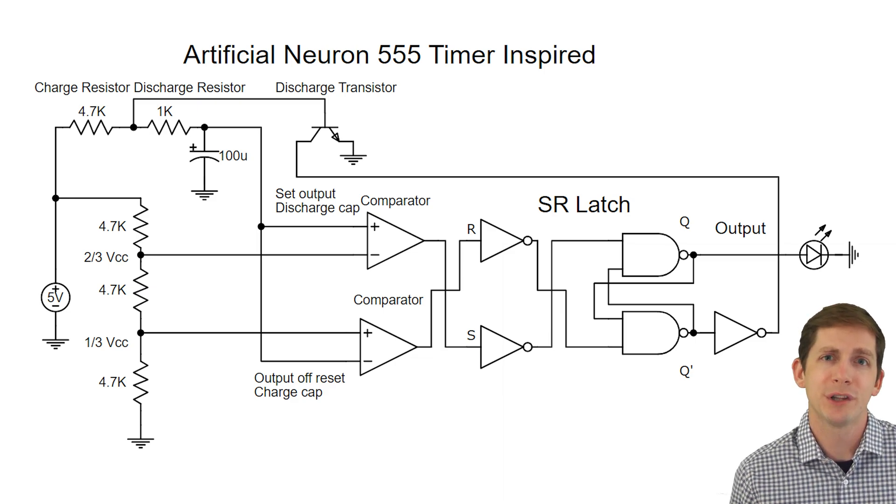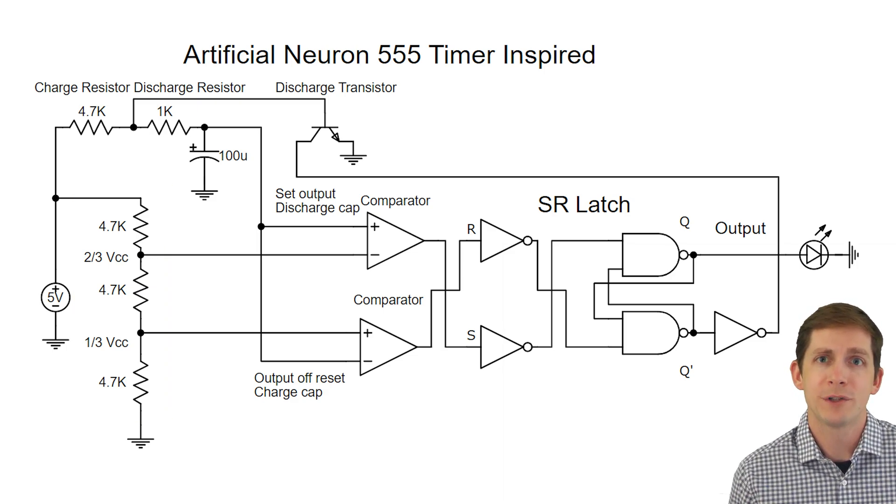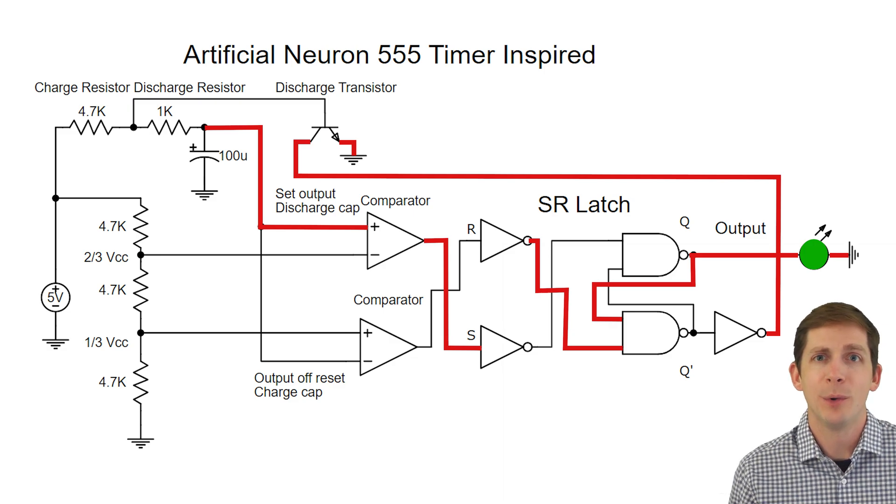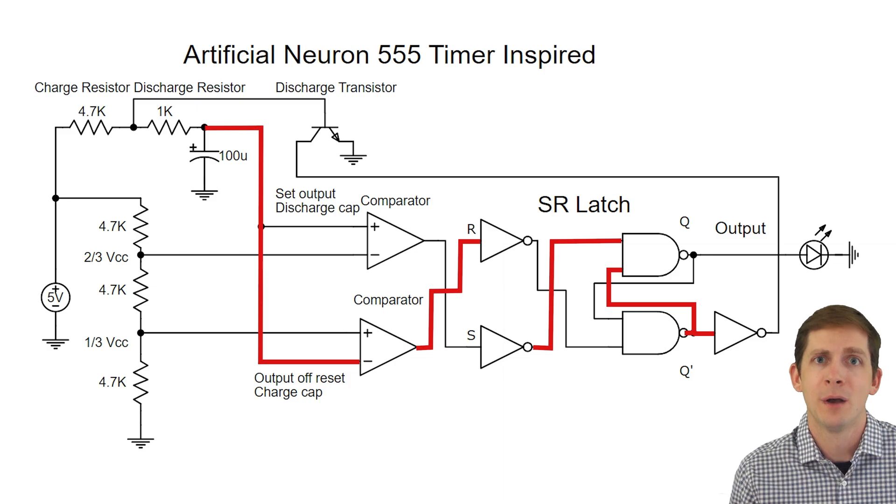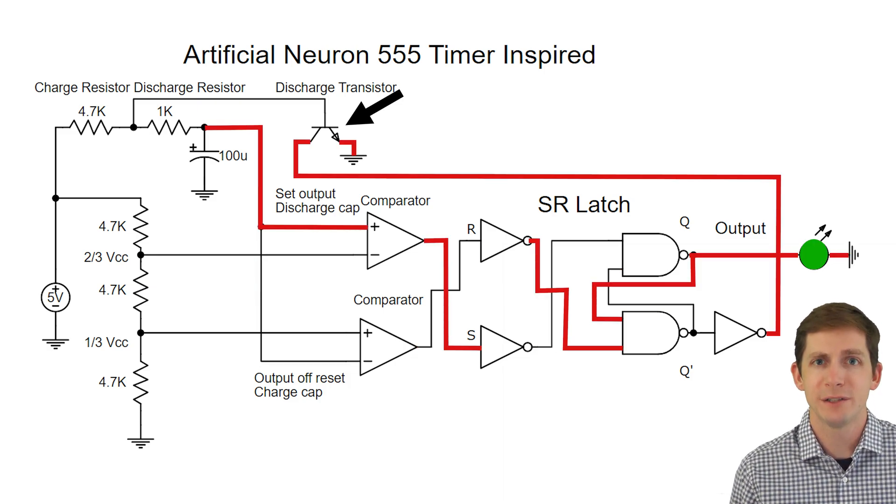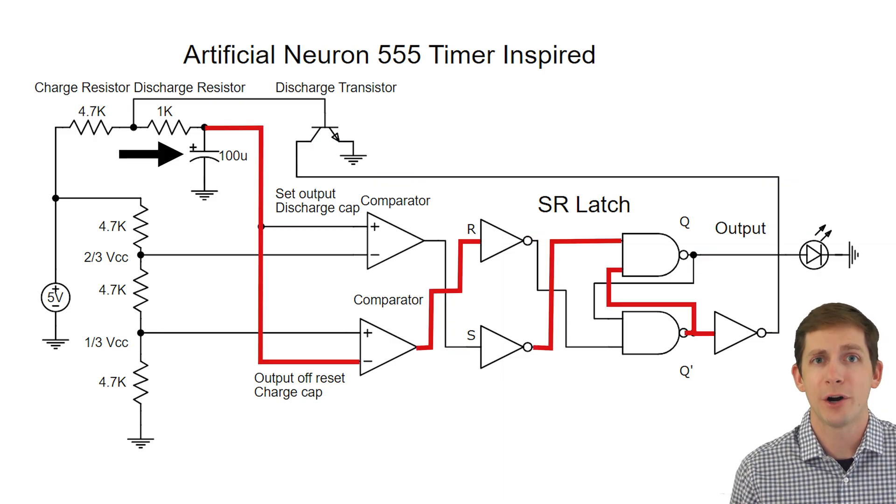I drew up what the circuit would look like with a 555 timer style design. In this case, a voltage divider would be used to create a high and low value, which are then used as inputs into two comparators. When the upper voltage is reached, it would set the SR latch output on, and when the lower threshold is reached, it would set the SR latch output off. When the output is set on, the capacitor would discharge to ground through the discharge transistor. And when the output is off, the capacitor is able to charge.